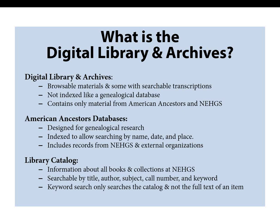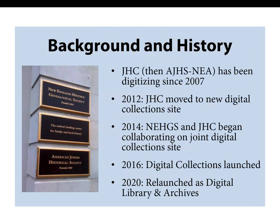In contrast, the databases on AmericanAncestors.org are designed specifically for genealogical research on individuals and families. The databases are indexed and allow searching by name, date, and place. They include records from American Ancestors and NEHGS as well as records from other partnership organizations. The library catalog contains information about all holdings — books, manuscripts, periodicals, and so on — of the NEHGS Research Library, Special Collections, and the Jewish Heritage Center. It's searchable by title, author, subjects, call number, and keyword. Note that the keyword search does not search the full text of the item, but rather searches the full text of the catalog record about it.